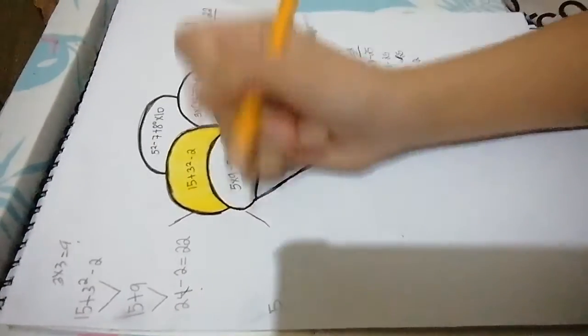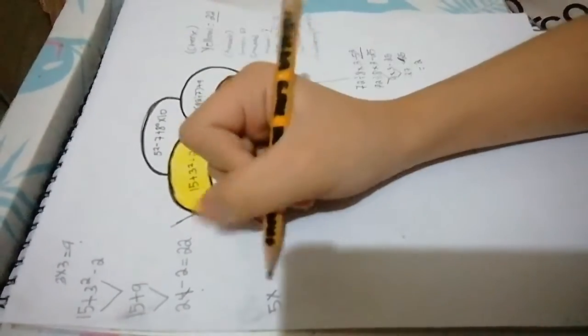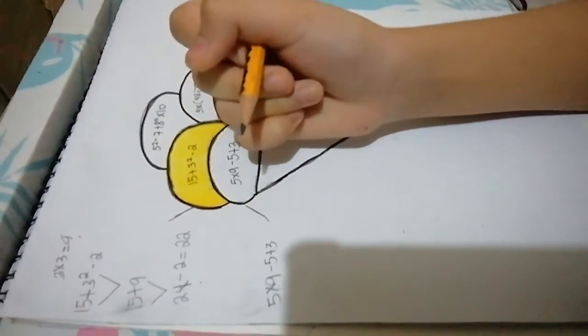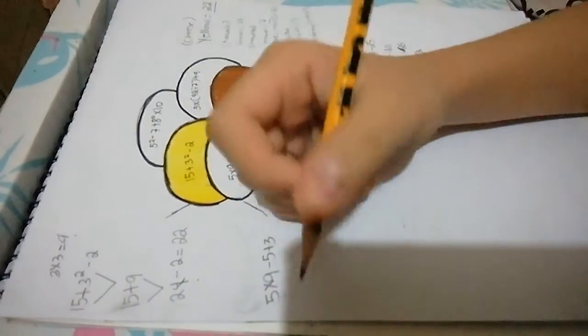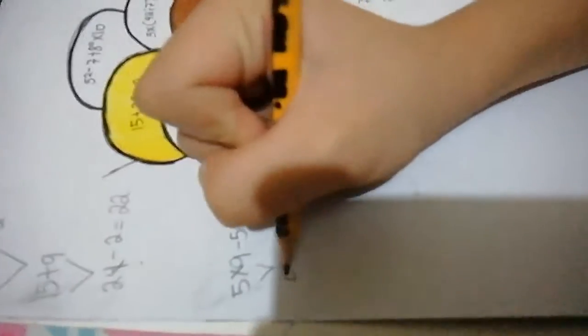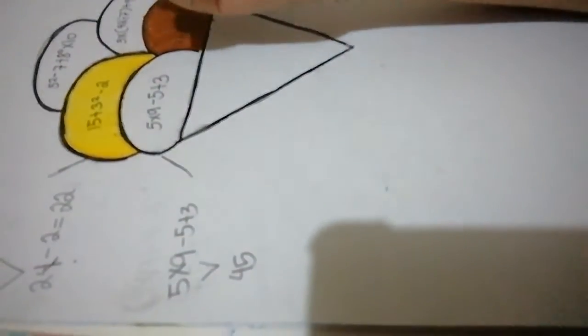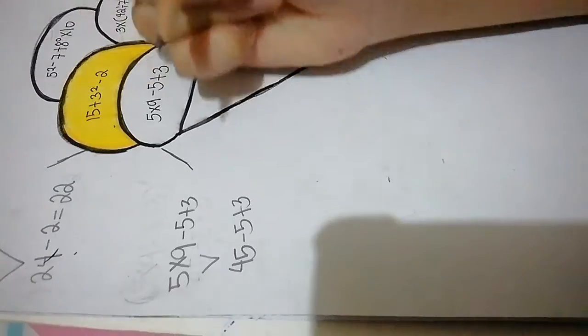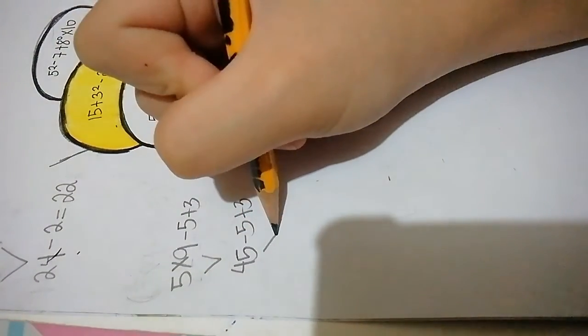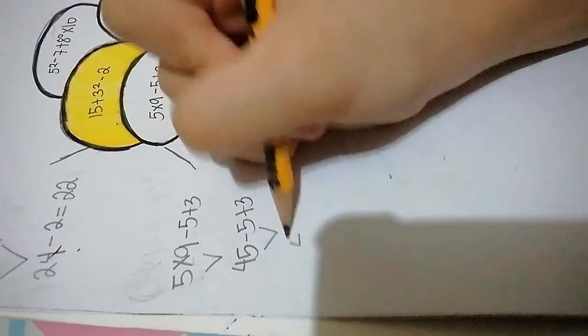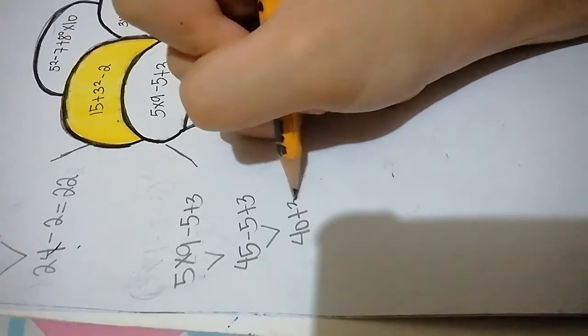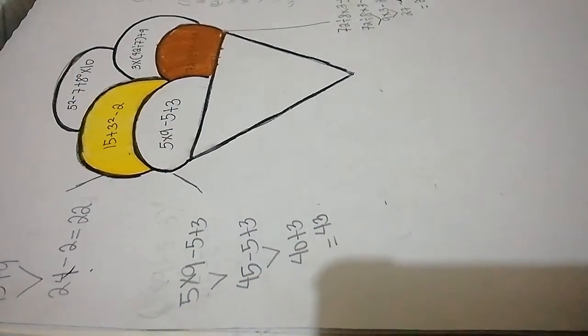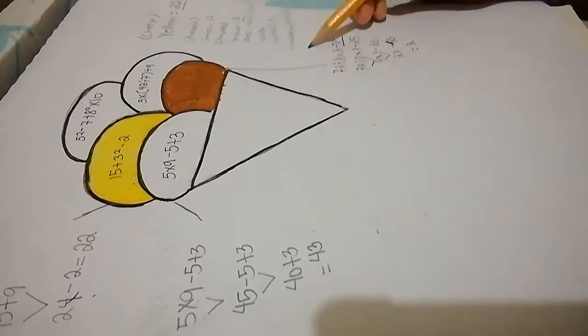5 times 9 minus 5 plus 3. 5 times 9 is 45. 45 minus 5 is 40 plus 3 equals 43. So 43 is strawberry pink.